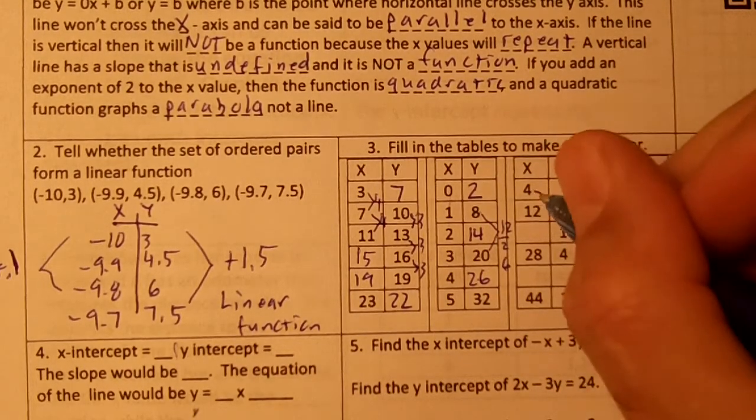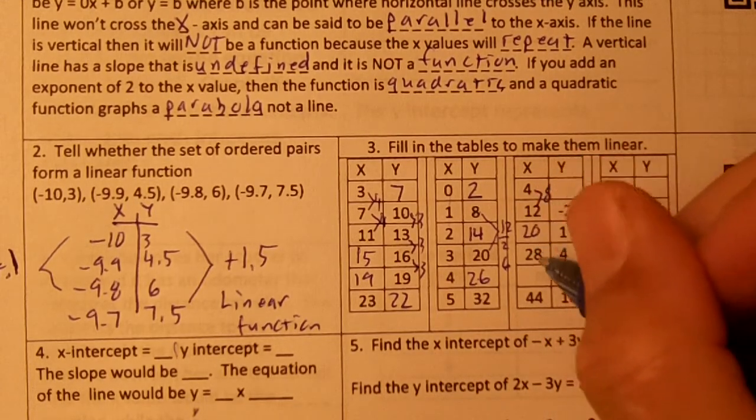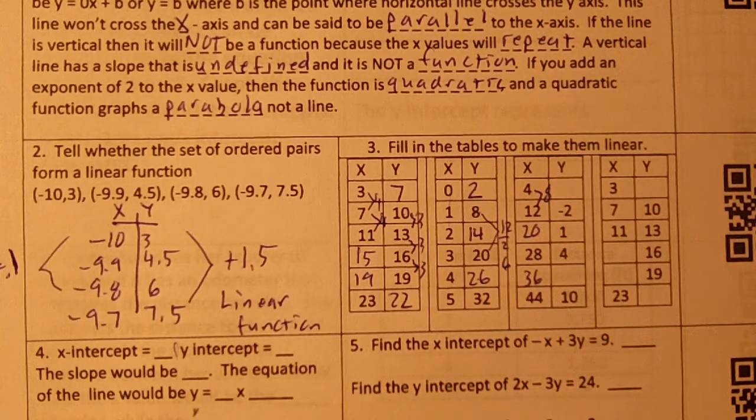Let's go over here. This constant rate of change is 8, so we're just going to keep adding 8 to go down. 12, 20, 28, 36, and 44 would work.